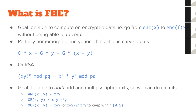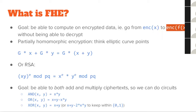So to start off, let's talk about what fully homomorphic encryption is. The goal of FHE is basically to have an encryption scheme where you can compute on encrypted data. So if you have an encryption of x, you want to be able to turn that into an encryption of f(x) for some function f, without being able to decrypt — so without being able to determine x or f(x).